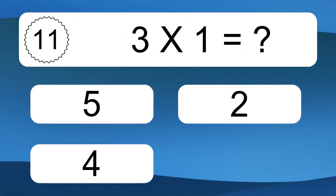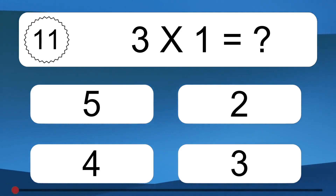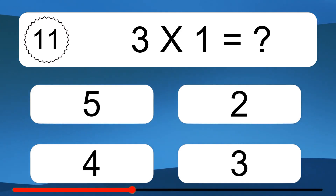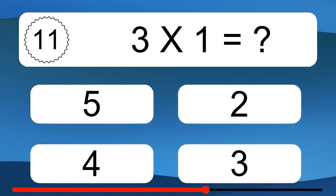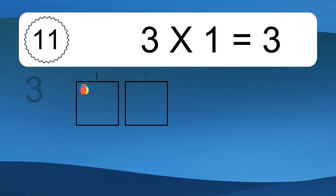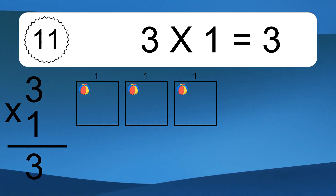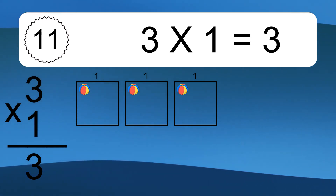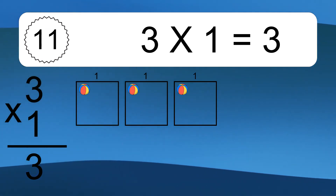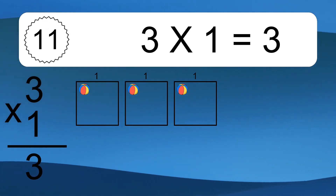3 times 1 equals what? 3 times 1 equals 3. We have 3 boxes and each box has 1 colorful ball inside. If you count all the balls in all the boxes together, you will have 3 times 1 balls. This equals 3 balls.